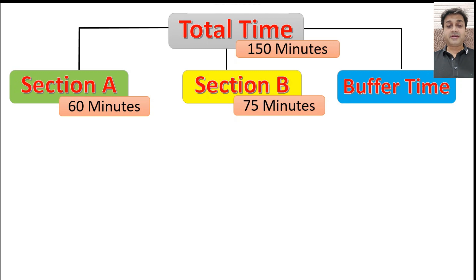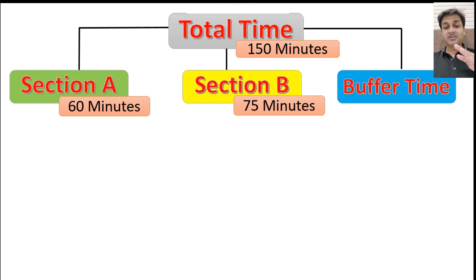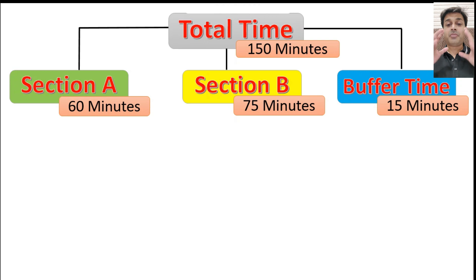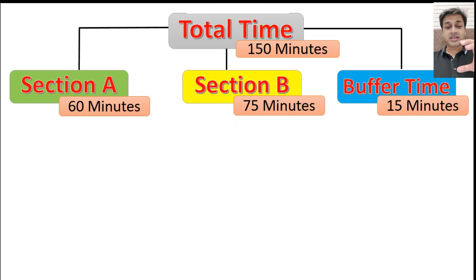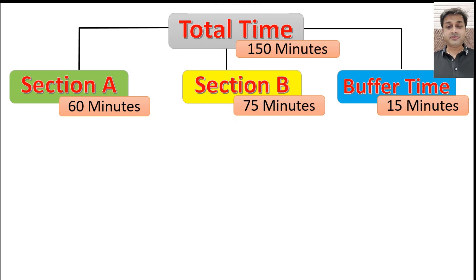When you add these two — Section A and Section B — you finish your paper. That is 60 minutes plus 75 minutes, and you still have 15 valuable minutes left. That's your buffer time. So we've broken it into three parts: Section A, 60 minutes; Section B, 75 minutes; and buffer time, 15 minutes.